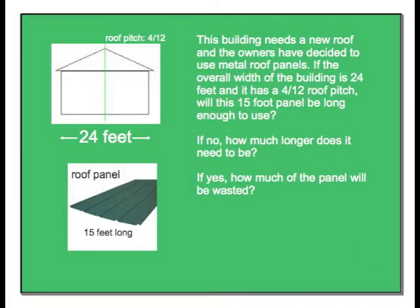The building shown needs a new roof and the owners have decided to use metal roof panels. If the overall width of the building is 24 feet and it has a 4 12 roof pitch, will this 15 foot panel be long enough to use? If not, how much longer does the panel need to be? If yes, how much of this panel will be wasted?